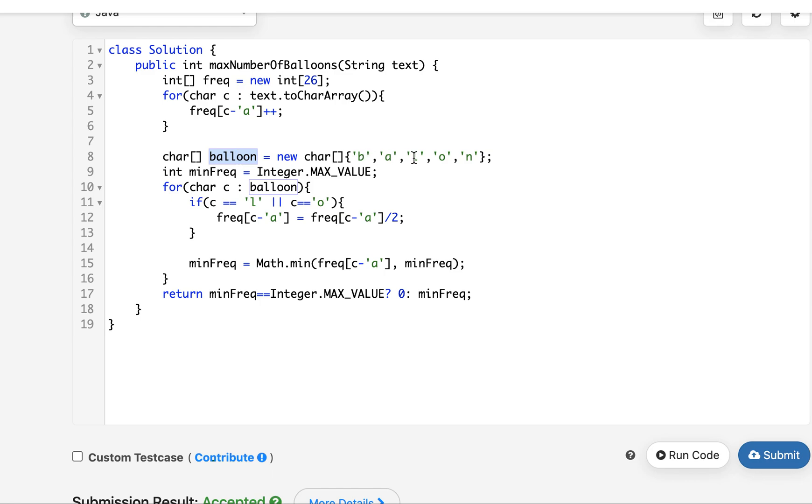Next I go ahead and create a new array for the balloon string and balloon has how many different characters: B, A, L, O, N. So with these characters I need to iterate and find out the minimum value. I have taken another variable that will store my answer. Minimum frequency initialized to the maximum value of integer. I start the iteration and in case I find out that the current element happens to be L or O, I reduce the frequency by a factor of 2.